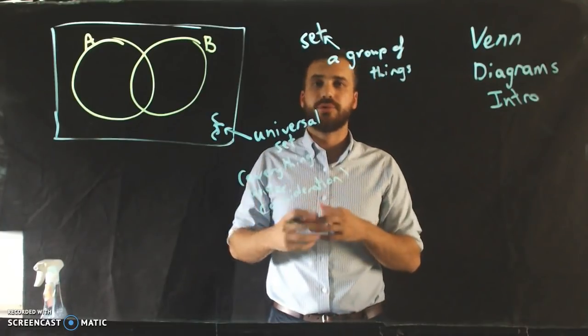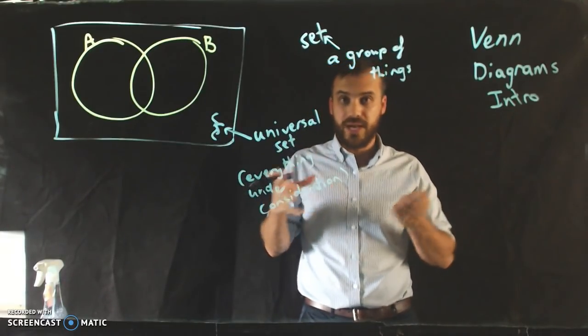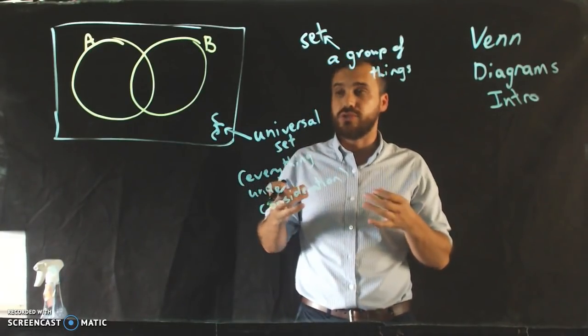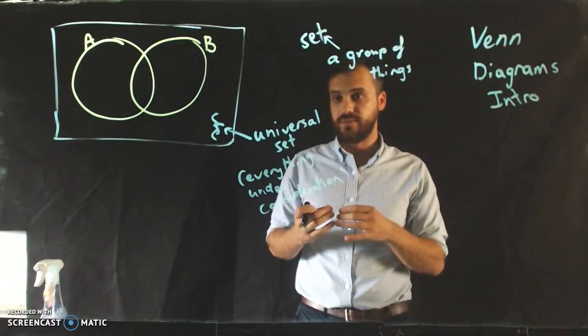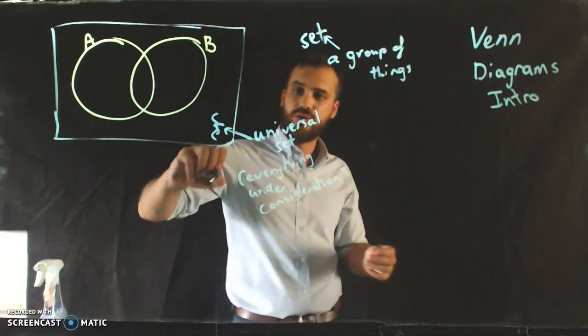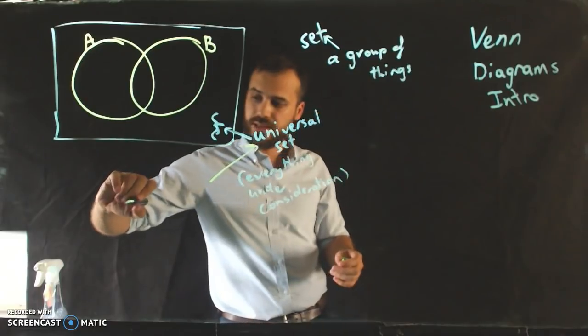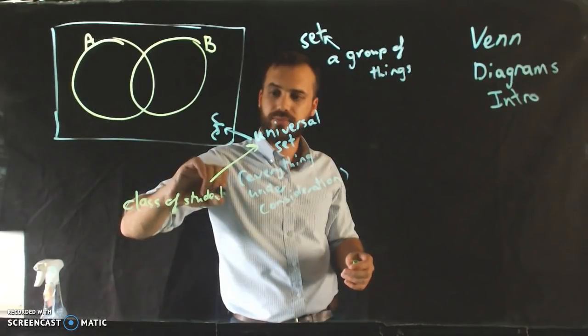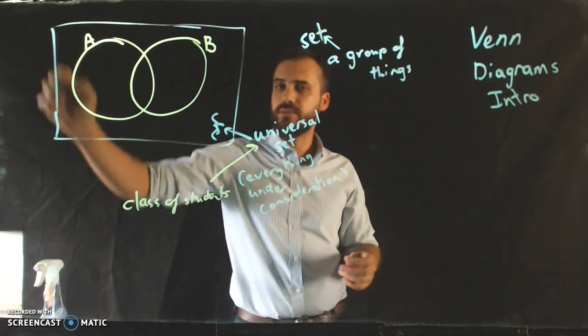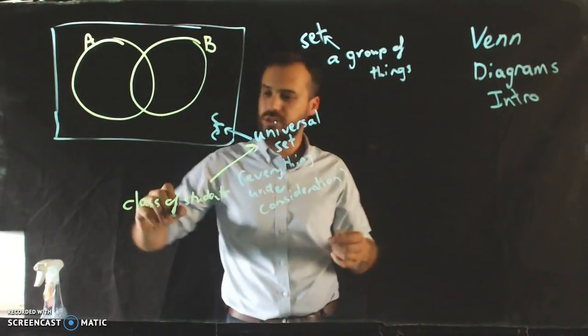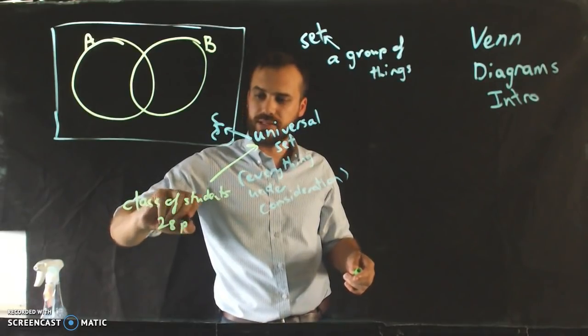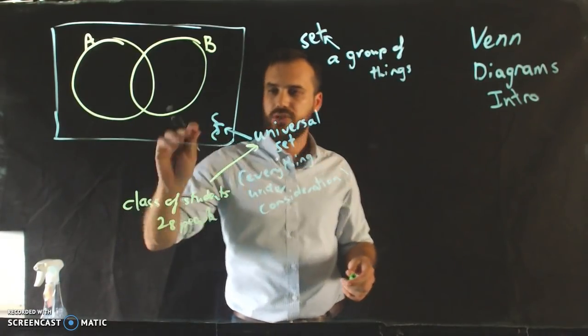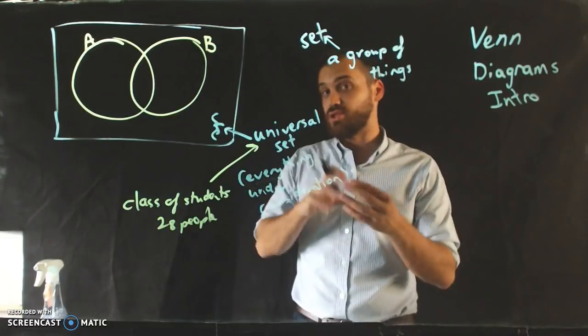Let's use a pretty classic example that teachers use because they're not very imaginative. A group of students, or a class of students. So in this case, the universal set is the entire class of students. And that's represented by our rectangle here. A class of students is usually about 28 people in a class. So our universal set size is 28.